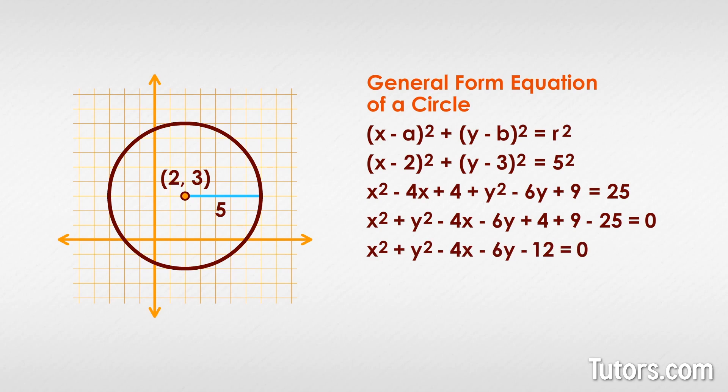This is the general form of a circle. You can recognize it because the two leading terms will always be x squared and y squared. The generic general form equation looks like this.